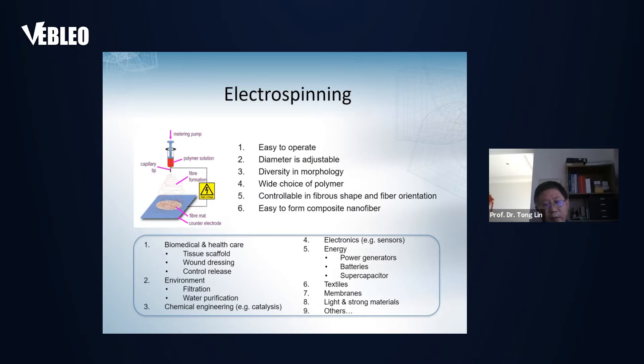I think many of you may know electrospinning. It's a very simple but efficient way to produce nanofiber. This picture shows a very classic electrospinning setup. It can be very simple. If you have a high-voltage power supply, syringe with a needle, and metal plate, you are able to produce nanofiber.